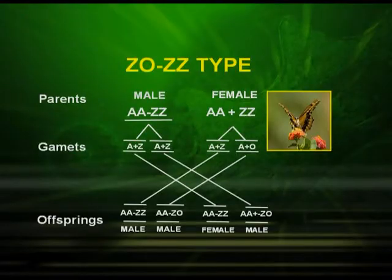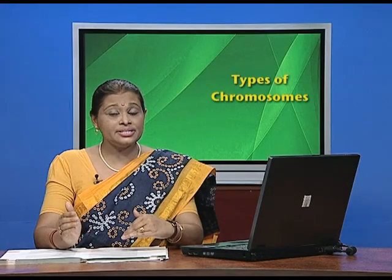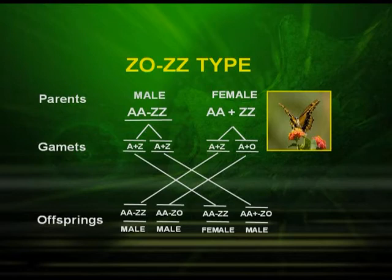The third type is ZW/ZZ, found in birds and some reptiles. The female is heteromorphic having AA+ZW, where AA stands for autosomes and ZW for sex chromosomes, while the male is homomorphic — AA+ZZ. The fourth type is Z0/ZZ, found in butterflies and moths, where the male is AA+ZZ (homomorphic) and the female is heteromorphic, producing two types of eggs: A+Z and A+0.